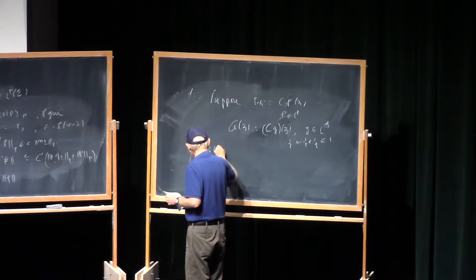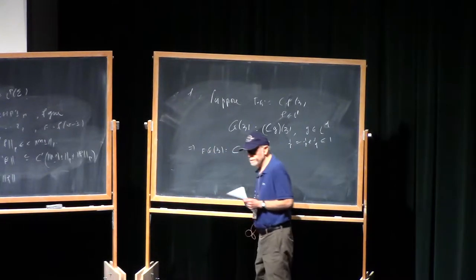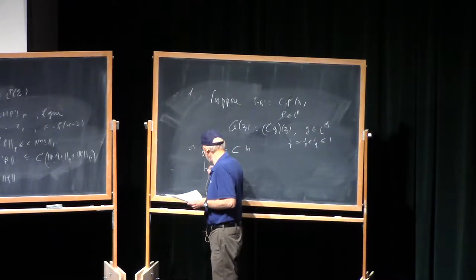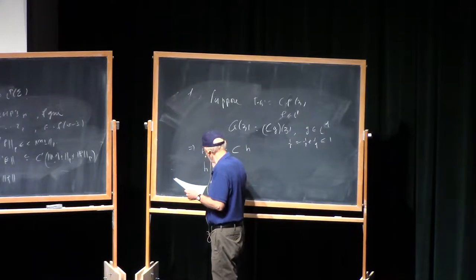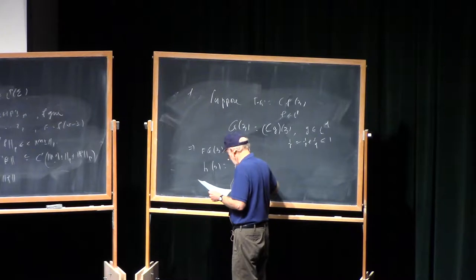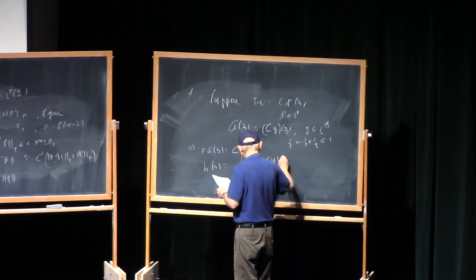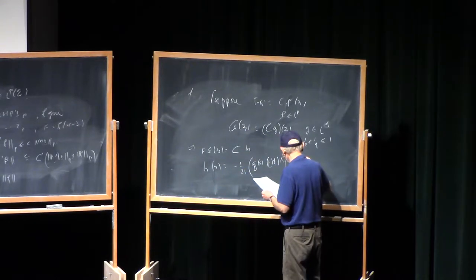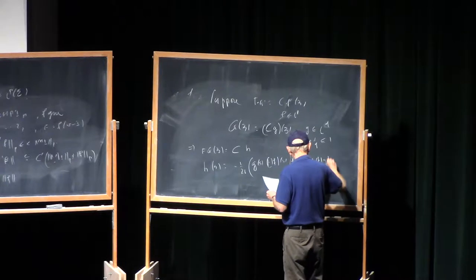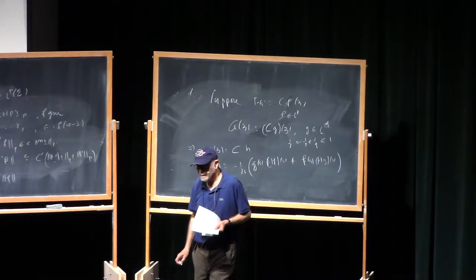Then fg at z is the Cauchy transform of some function h. And it's a little exercise to show that h on the contour is minus 1 upon 2i, g of s, Hf of s, plus f of s times Hg of s.